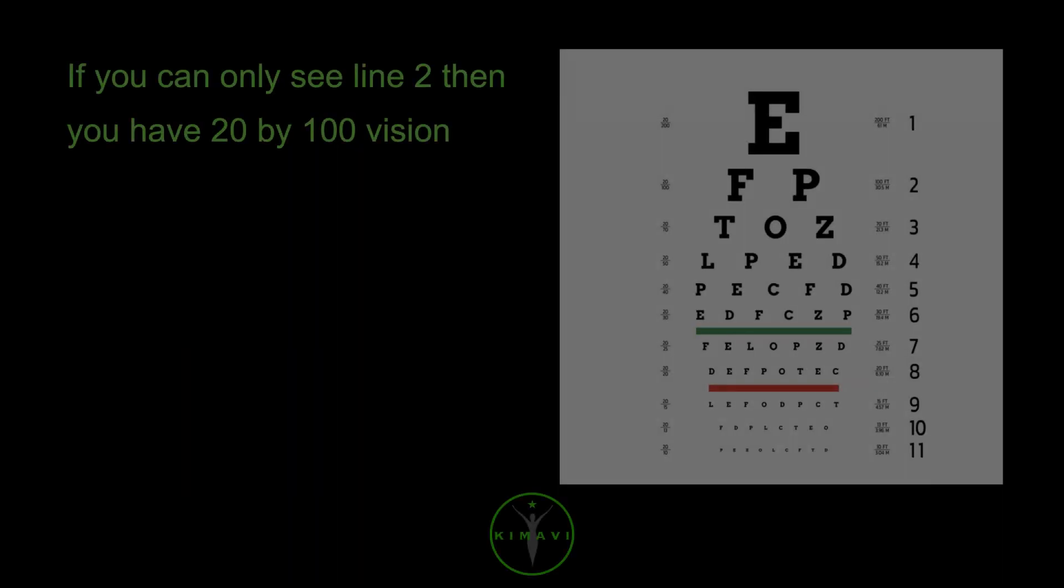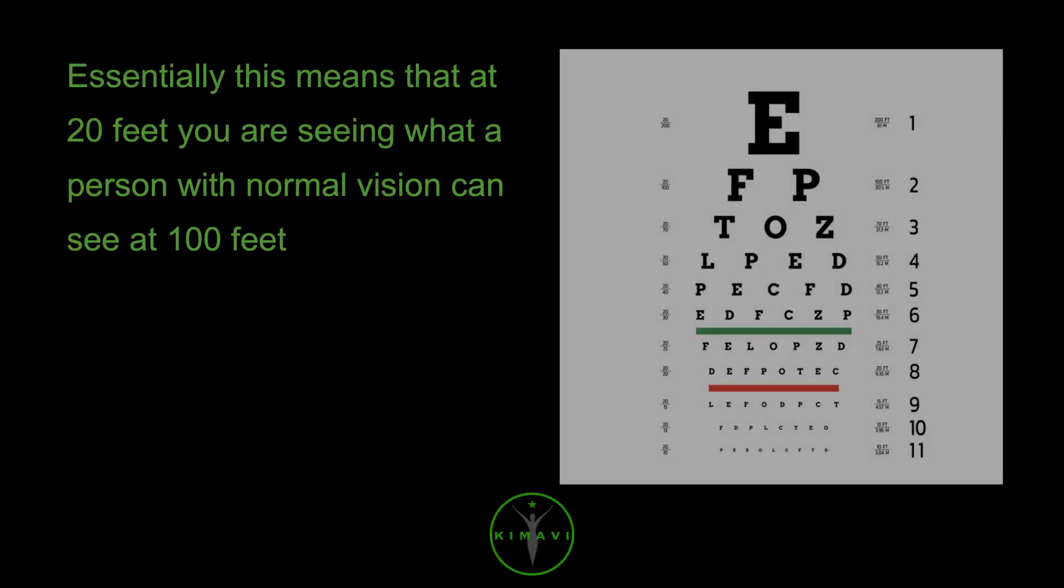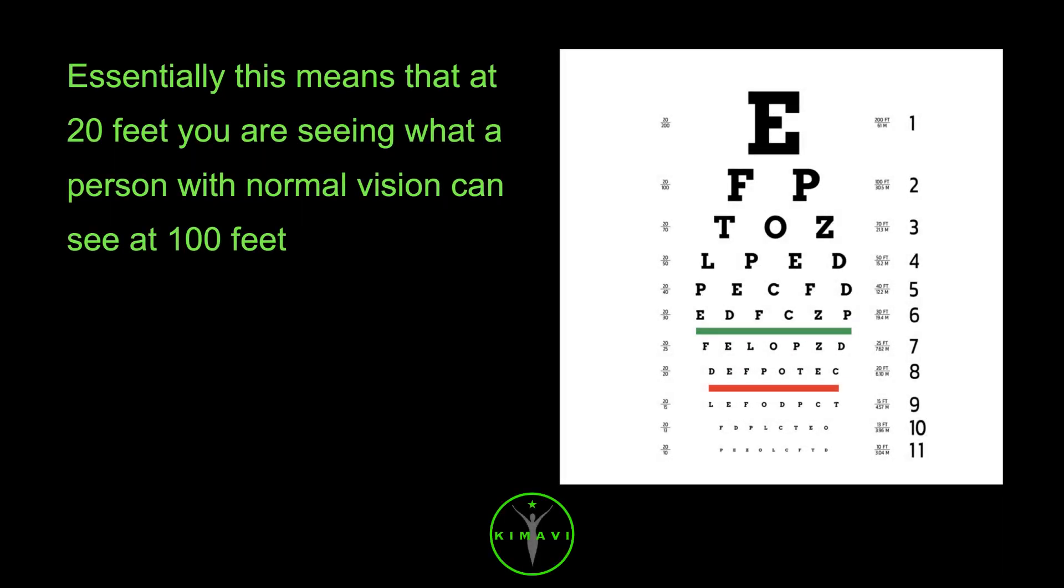If you can only see line 2, then you have 20 by 100 vision. Essentially this means that at 20 feet you are seeing what a person with normal vision can see at 100 feet.